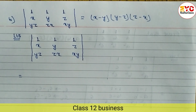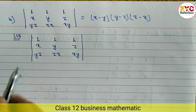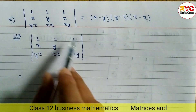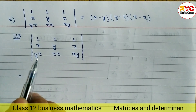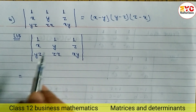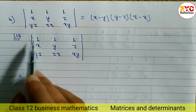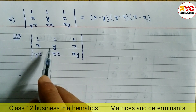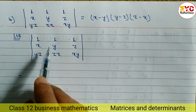Hello everyone. This question is taken from Class 12 Math. We have to prove the given determinant identity. Taking LHS, what we have to do first of all is make any two elements either in rows or columns equal to 0.